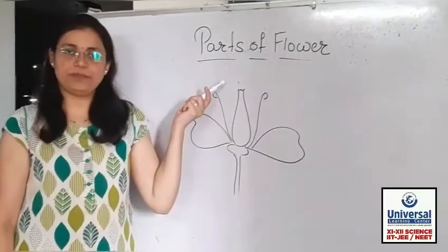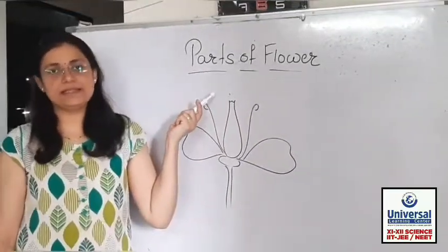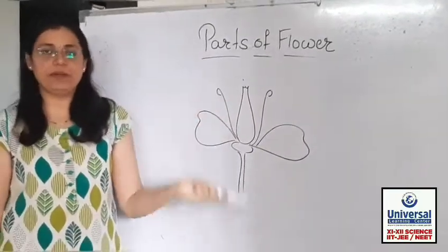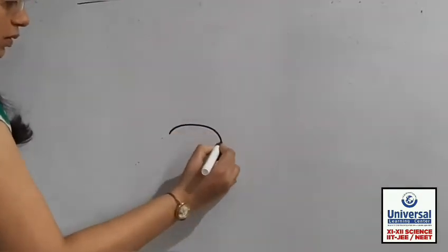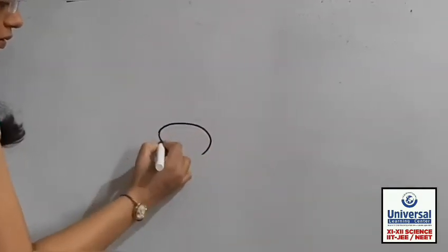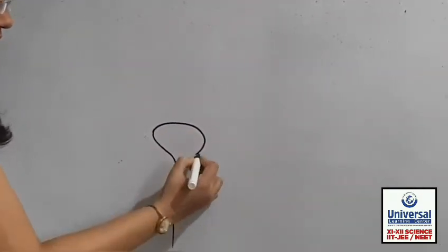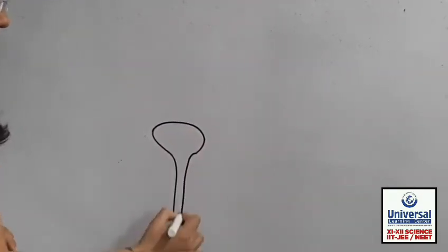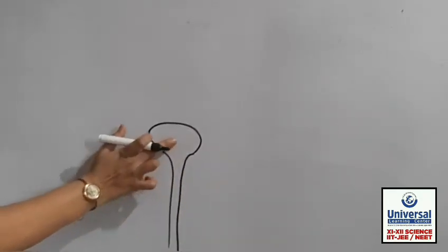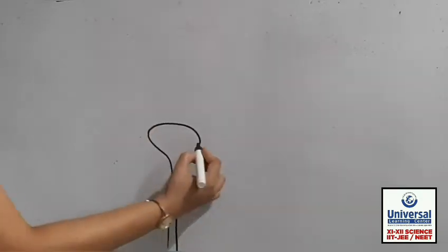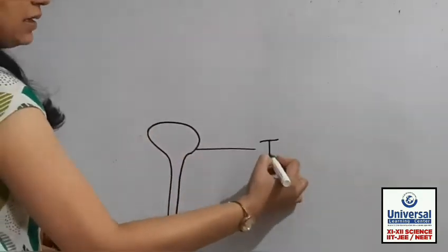Today's topic is parts of flower. Let us see different parts of the flower. Now I am going to draw a flower. This is the base of the flower, called the thalamus.